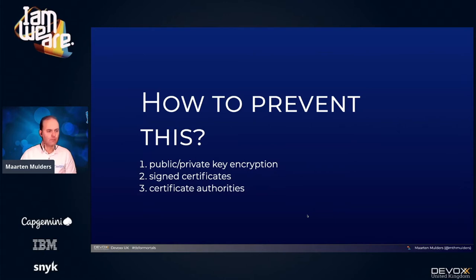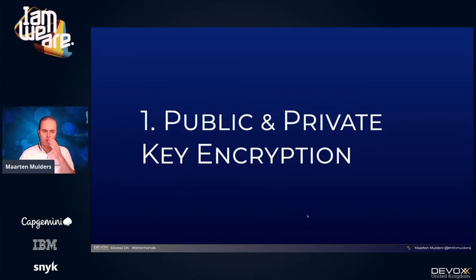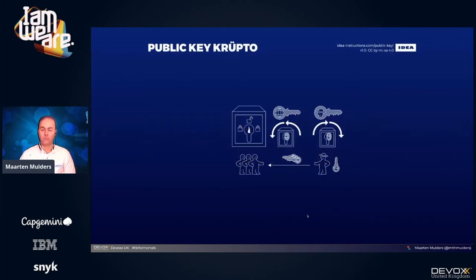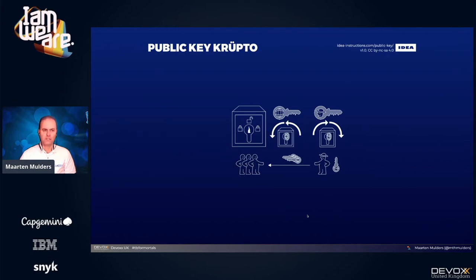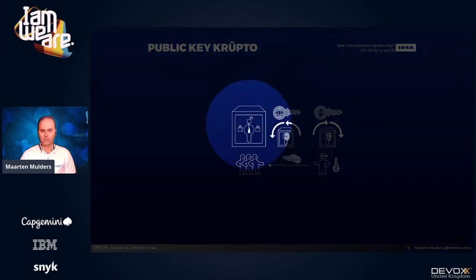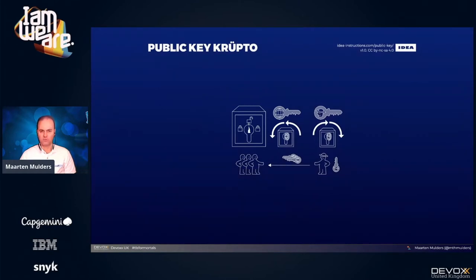Public/private key encryption is typically the stuff that requires a PhD in mathematics to understand. I don't have one, but I can construct Swedish furniture, and luckily we've got some diagrams in exactly that language. Let's look at public and private key encryption, also called asymmetric encryption. You can see it as a kind of safe with a lock. The lock accepts two keys: one has a globe on it — that's the public key — and the other has my face on it — that's the private key.